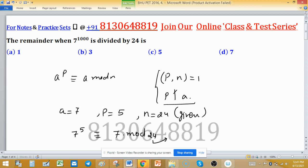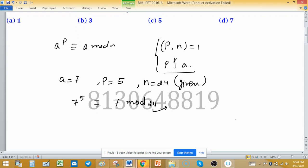And we know that 7 square is 49 and 24 times 2 is 48, so 1 will be the remainder. It means that 7 raised to the power 5 whole squared is congruent to 7 squared mod 24.